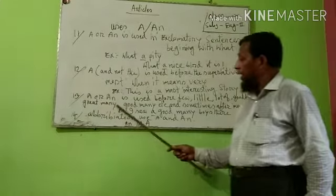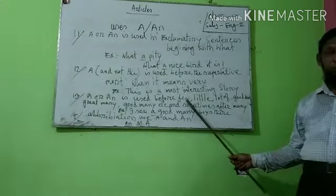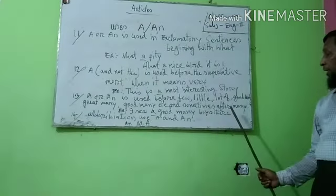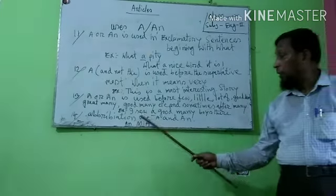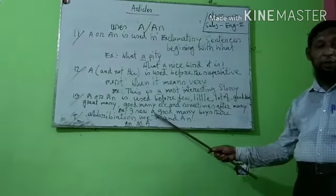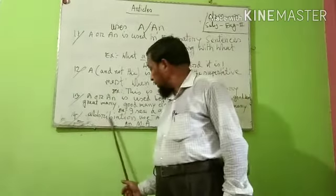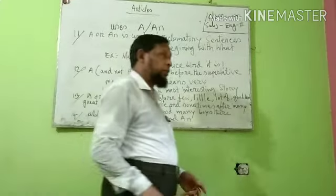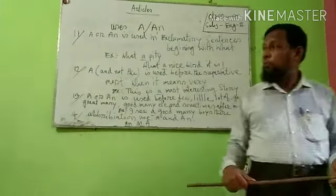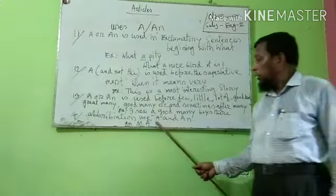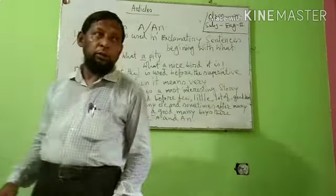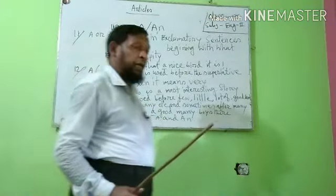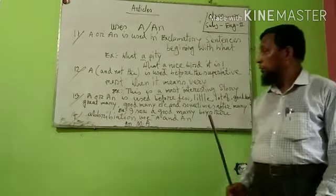Number thirteen: A or AN is used before few, little, lot of, a good deal, great many, good many. Example: I saw a good many boys there. For abbreviations — MA, SSC, HSC, JSC, BA, BSc, MCom — use A or AN based on pronunciation of the vowel sound. Example: My brother is an MA, and a BA.